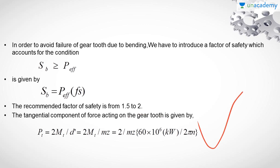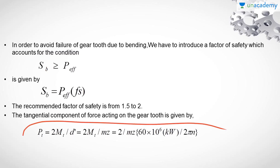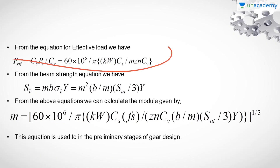With the help of this value we are going to estimate the value of module which can avoid the failure of gear tooth due to bending. From the equation for the effective load, P_effective equals CS into PT divided by CV, we get 60×10⁶ divided by π, multiplied by KW·CS divided by MZN·CV, replacing PT with the corresponding value. From the beam strength equation, SB equals M·B·Sigma_B into Y.